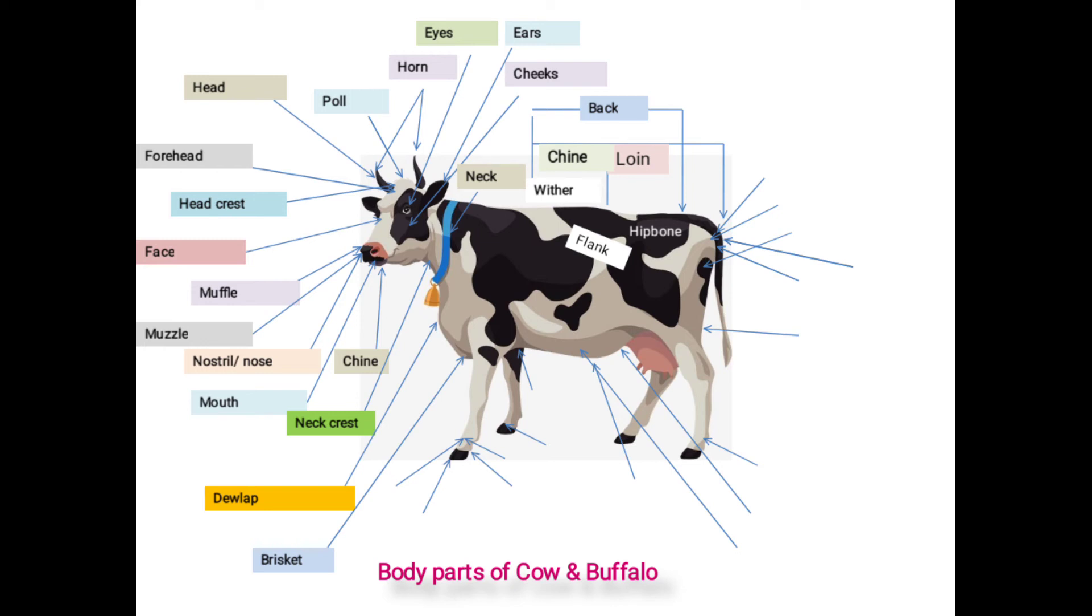And they are two in number, situated on both sides of the body. The distance between two bones indicates the development of reproductive organs in female.